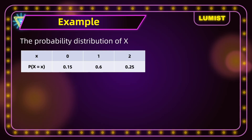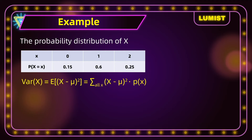Let's find the variance for the example from earlier. The variance of x equals the sum of (x − μ)² for all x in the distribution, multiplied by the corresponding probabilities. We know from earlier that the mean μ = 1.1, so now we can calculate the variance.